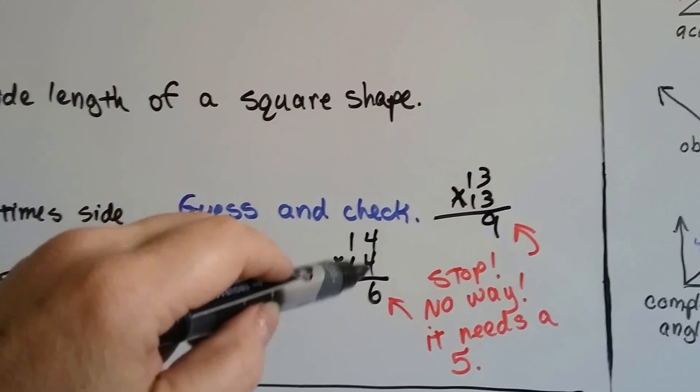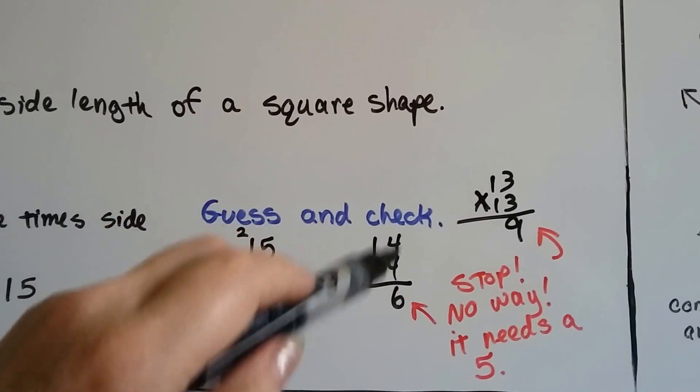14 times 14 would be 4 times 4, which is 16, which puts a 6 there. Nope. It needs a 5.